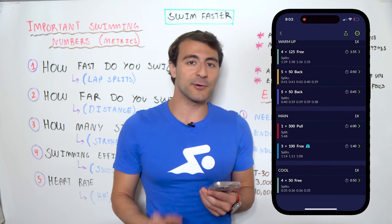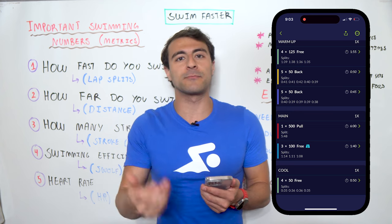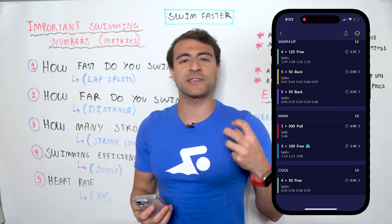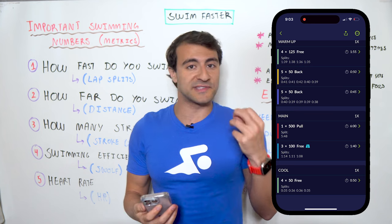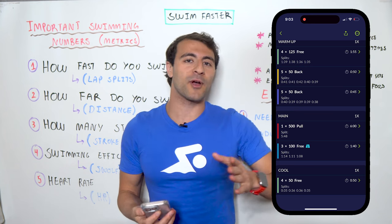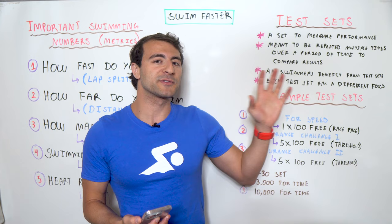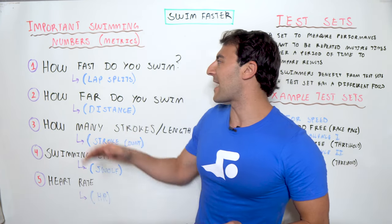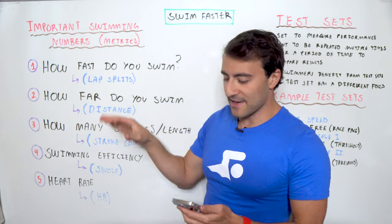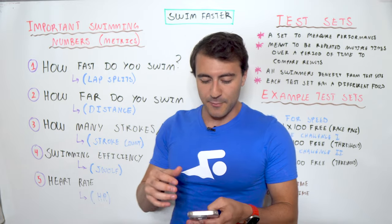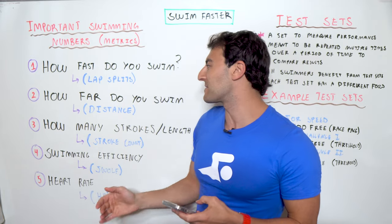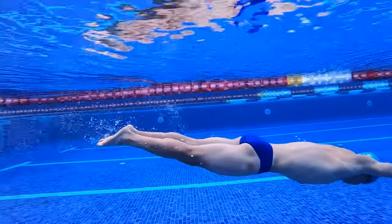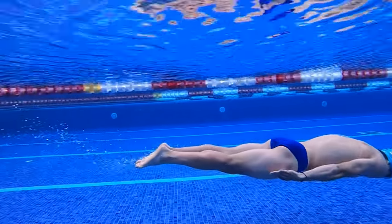If you just want to swim back and forth, that's totally fine — but every now and then it's important to do what are called test sets. These are the same set done over and over to measure your progress over a period of time. We'll talk about test sets shortly, but first let's continue through the five metrics.